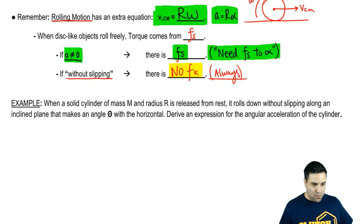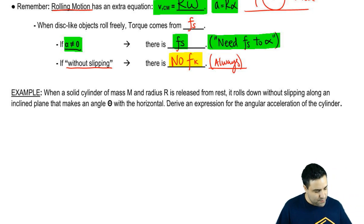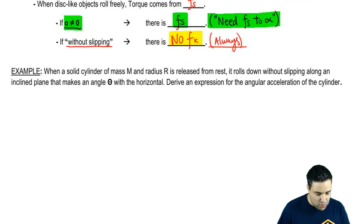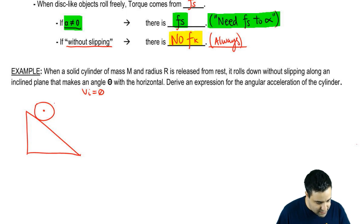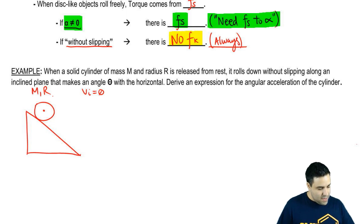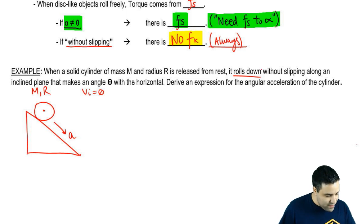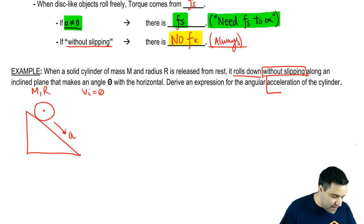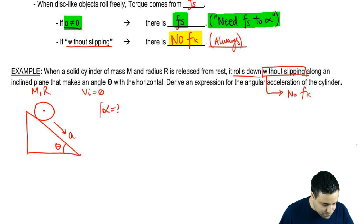Let's do a problem. A solid cylinder of mass M and radius R is released from rest and rolls down without slipping along an inclined plane. So I've got an inclined plane, and I release this from rest — initial velocity is zero. This object has mass M and radius R. It rolls down, meaning it's going to have an acceleration down the ramp. Without slipping means no kinetic friction. The plane makes an angle of theta, and we want to derive an expression for the angular acceleration alpha.